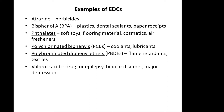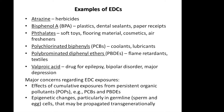There are also pharmaceuticals, such as valproic acid, a drug for epilepsy and bipolar disorder, that are in the category of endocrine disruptors. Major concerns regarding these EDC exposures include the effects of cumulative exposures from persistent ones such as PCBs and PBDEs, as well as epigenetic changes — particularly when they occur in germline cells, or sperm and egg cells — which may be propagated transgenerationally.